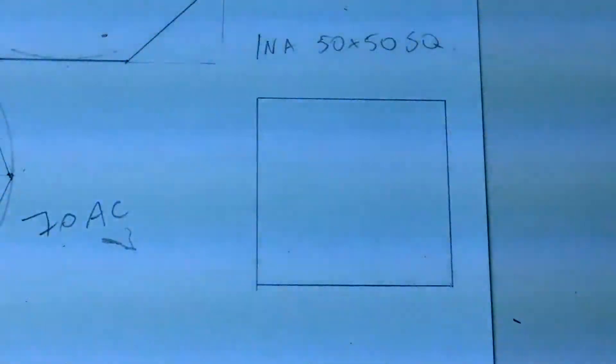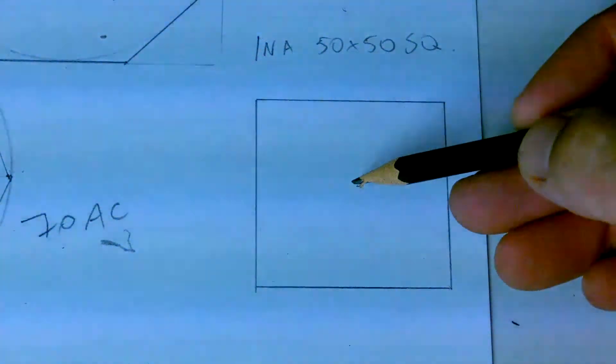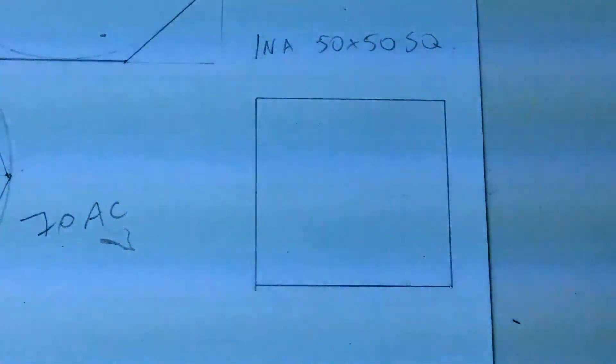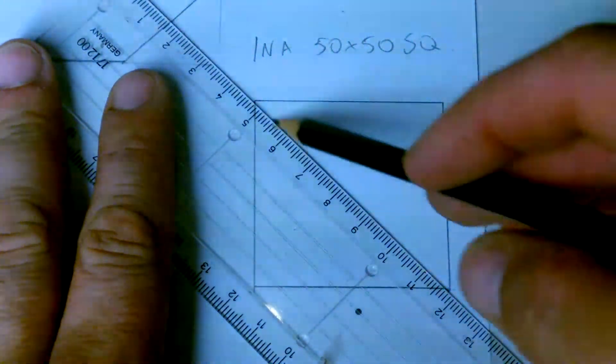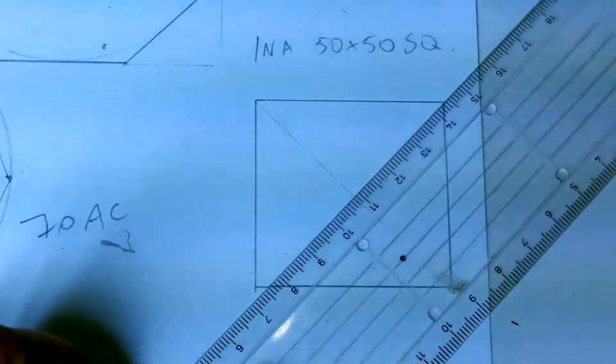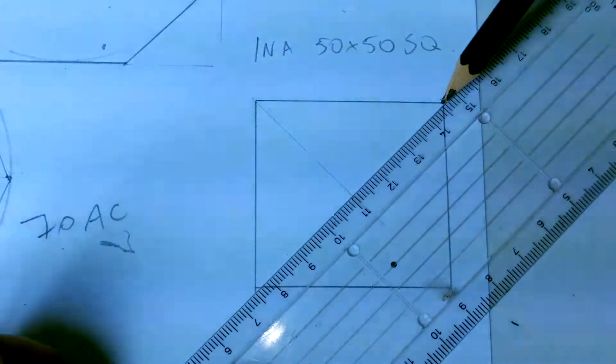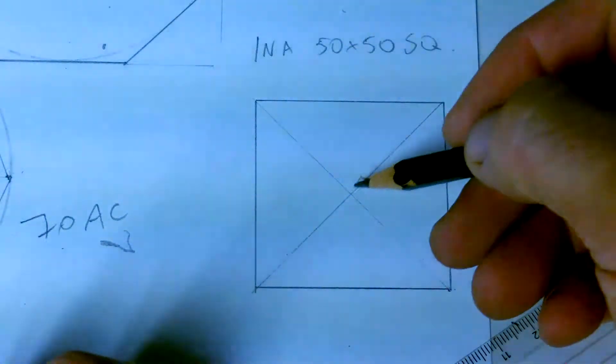And what you need to do first of all is to find the midpoint of that square. Now the easiest way to find the midpoint would be take a ruler and draw two diagonals, and you found the midpoint of that square.